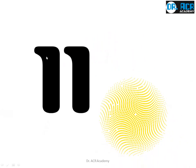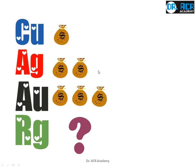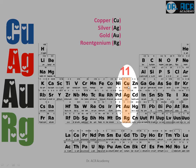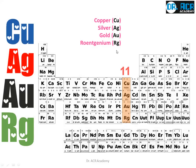Now we come to the eleventh group. This story is totally about cost. The last one, RG, is mentioned in the story as royal gold, but in reality it is not royal gold. Copper's cost is one bag of money, silver's cost is two bags, and gold's cost is three bags. When we come to royal gold, we don't know the price. So: Cu, Ag, Au, Rg. And these are its real names.